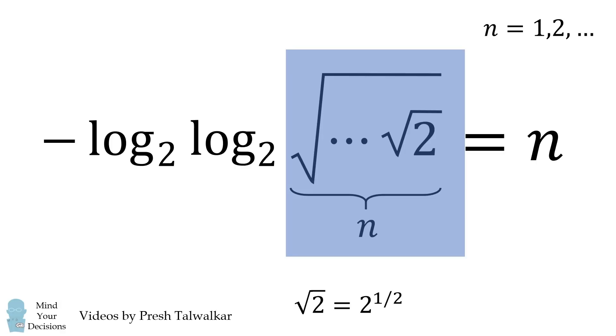Recall that the square root of 2 is equal to 2 to the power of 1 half. Therefore, the square root of the square root of 2 is equal to 2 to the power of 1 over 2 squared.